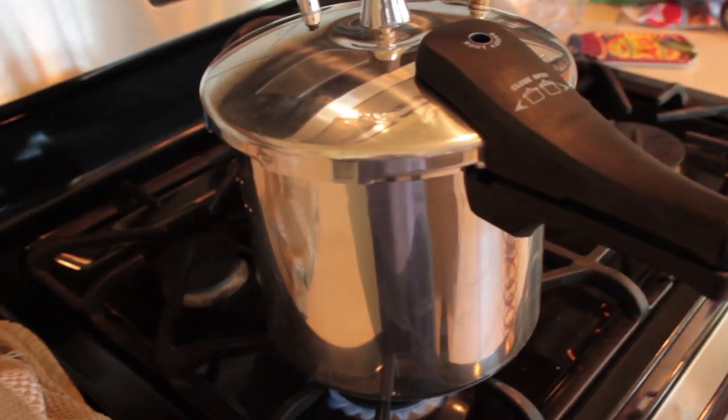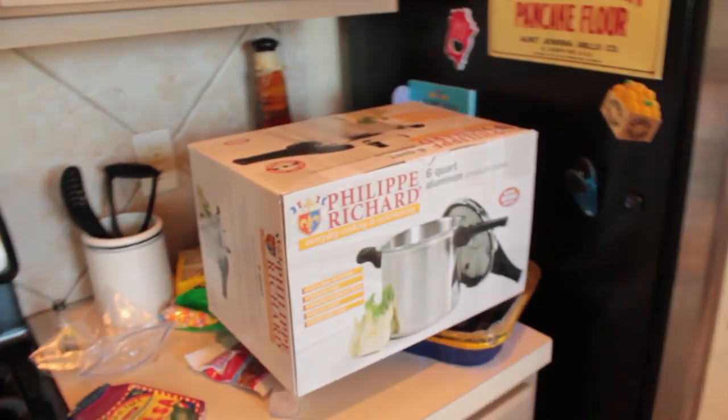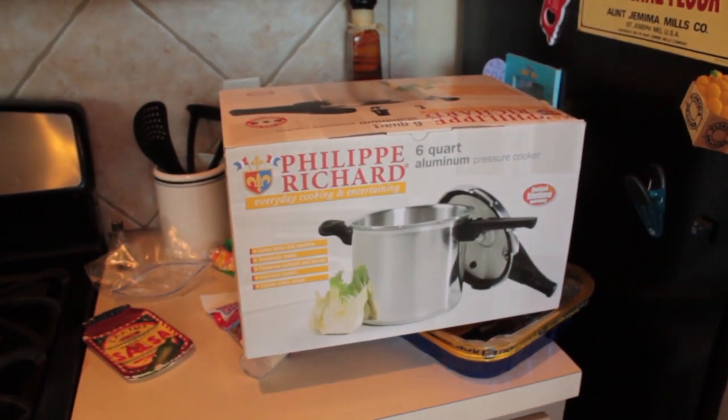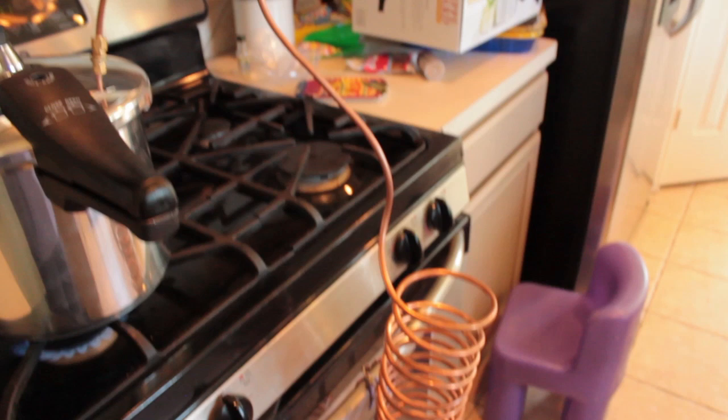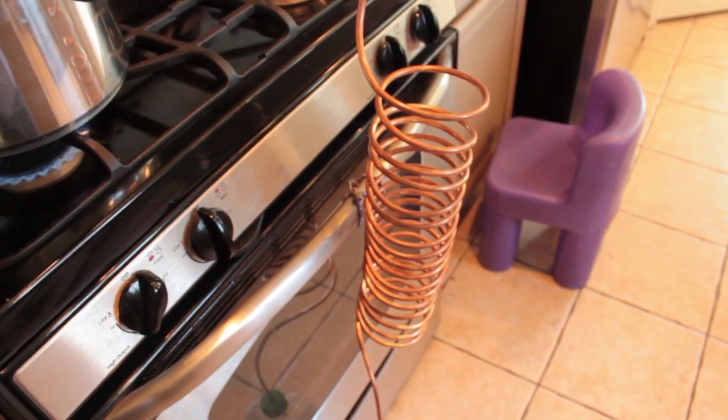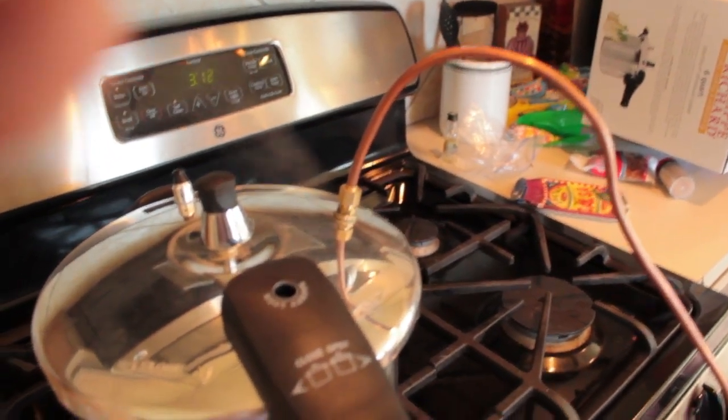This is a six quart pressure cooker from Walmart, $20. There's the box and this is a quarter inch copper tubing. Found that at Home Depot for $20, thereabout.